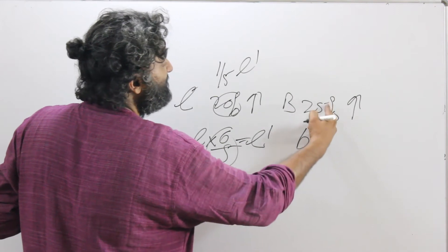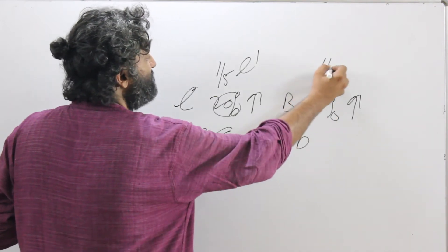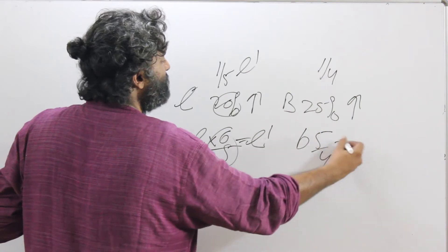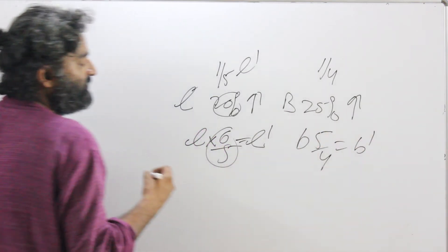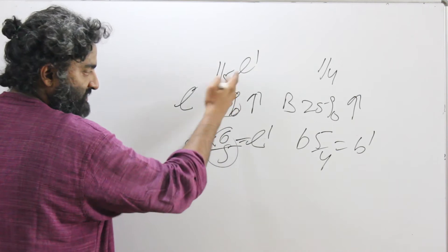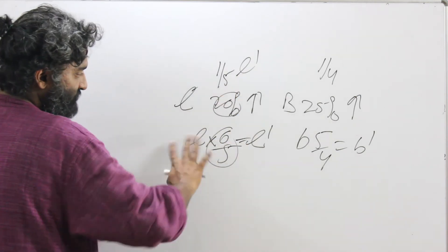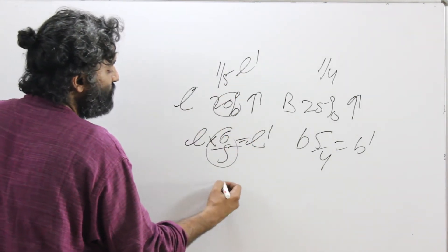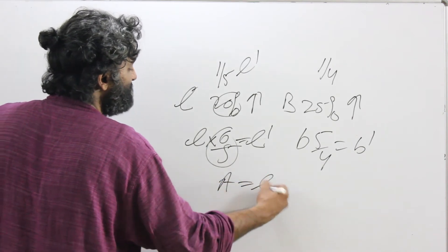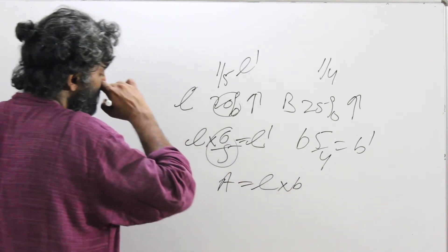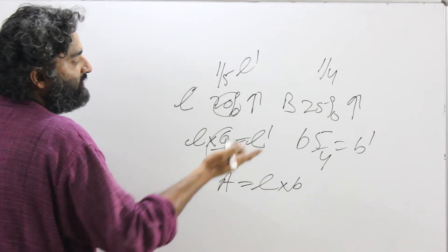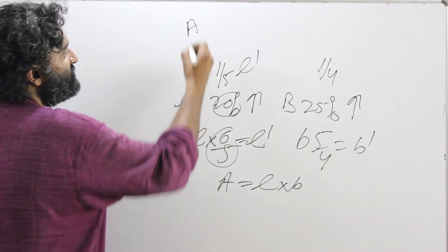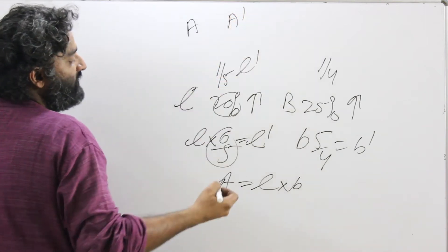The breadth has increased by 25%. 25% is 1 by 4. Increase of 1 by 4 would make it 5 by 4. So breadth into 5 by 4 is equal to the new breadth. The question is about the area, and we know area of a rectangle is length into breadth. I want to find the relationship between the old area and the new area.